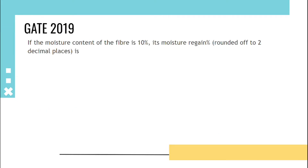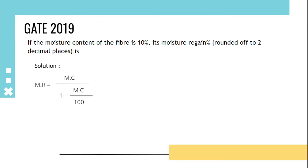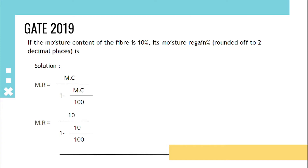If the moisture content of a fiber is 10%, its moisture regain percentage is asked. The solution is: we know that moisture regain equals moisture content upon (1 minus moisture content divided by 100). Substituting moisture content as 10%, we get moisture regain as 10 upon 0.9, that is 11.11%.